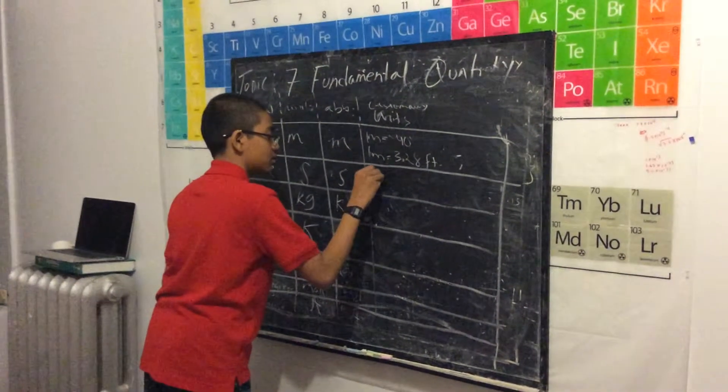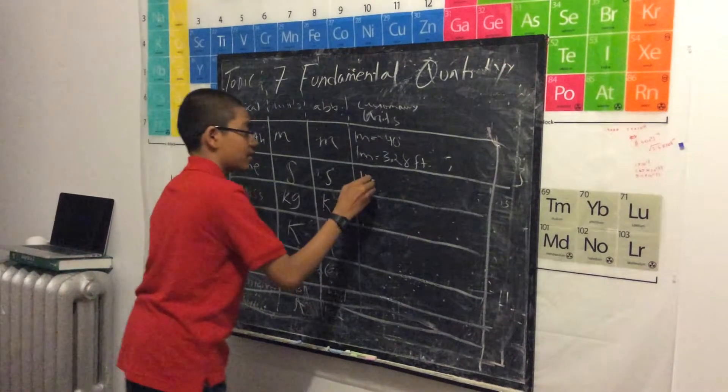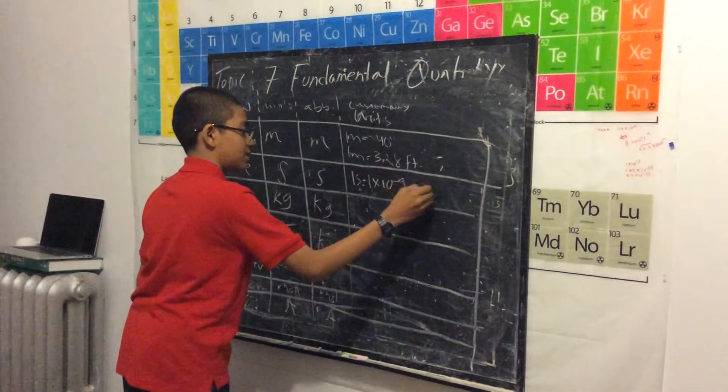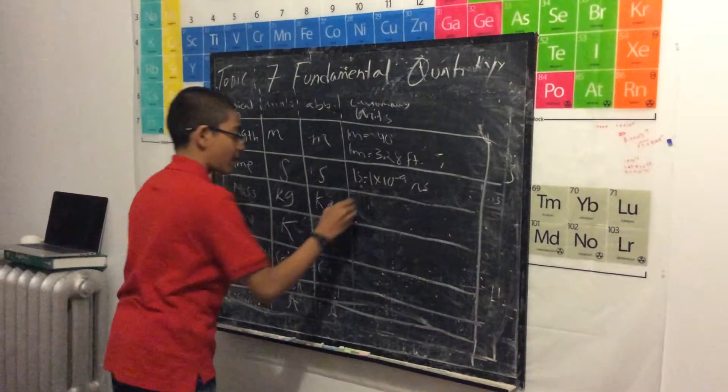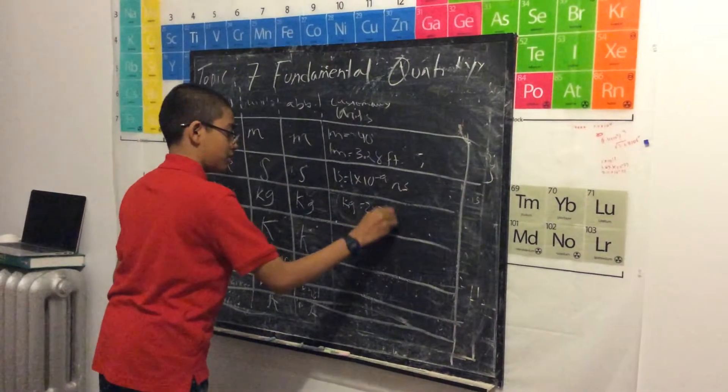So one second is 1 times 10 to the 9 nanoseconds. So one kilogram is about 2.2 pounds.